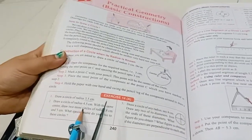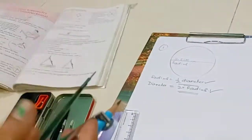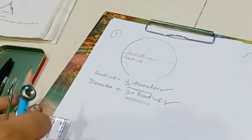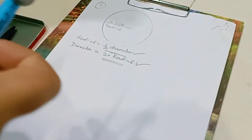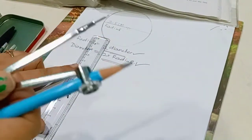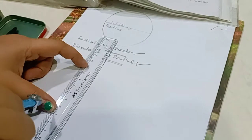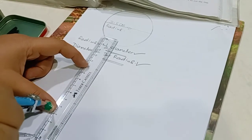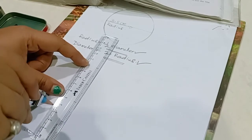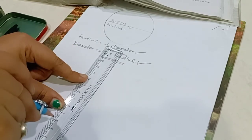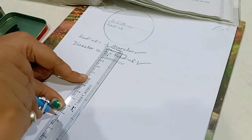First we draw the circle having radius 4.5 cm. Now we draw a circle having radius 4.5 cm. This is a compass. Measure the length of 4.5 cm.